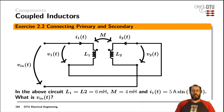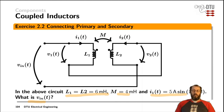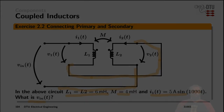And one more exercise: for a symmetrical transformer with inductance from both sides being 6 mH and mutual inductance being 4 mH, what is the input voltage if the current through the primary winding is the sinusoidal waveform shown, and the inductor is connected from the primary side to the secondary side and back to the lower potential of the input voltage?